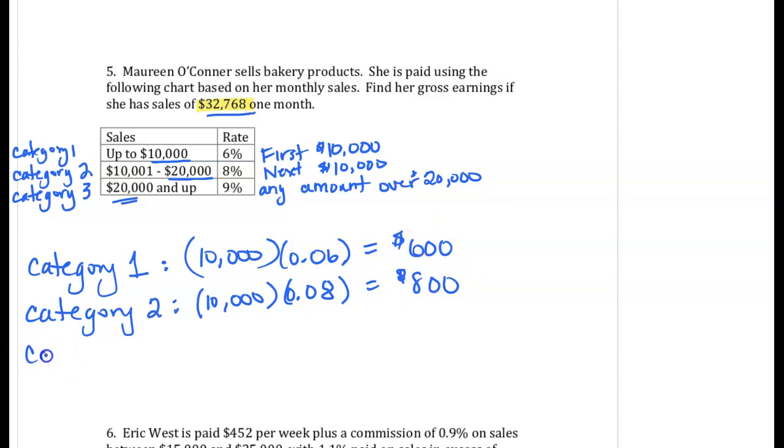In Category 3, we have to figure out how much sales are falling in this category. It's anything above and beyond the $20,000 that we were already paid for. Remember, we were already paid for $10,000 in sales in Category 1, and we were already paid for another $10,000 in sales in Category 2.